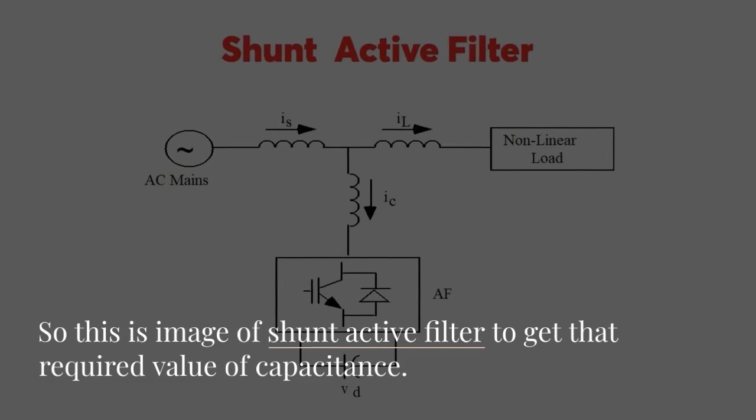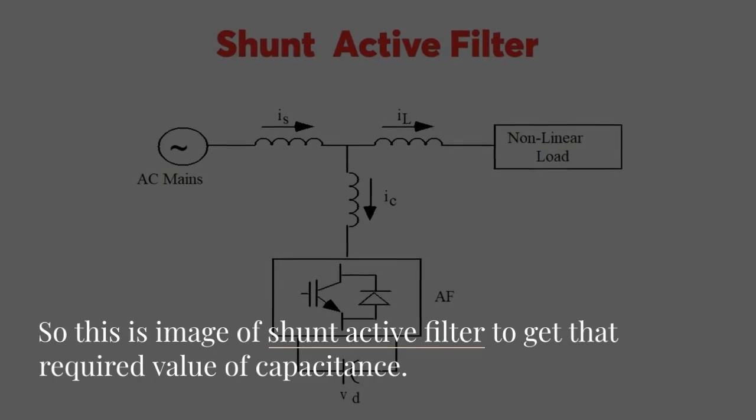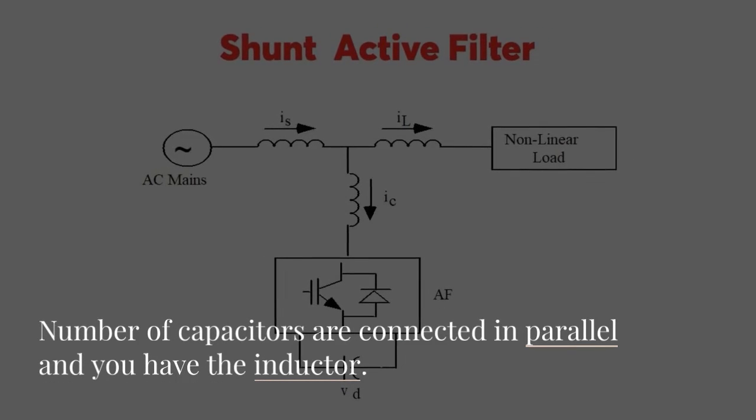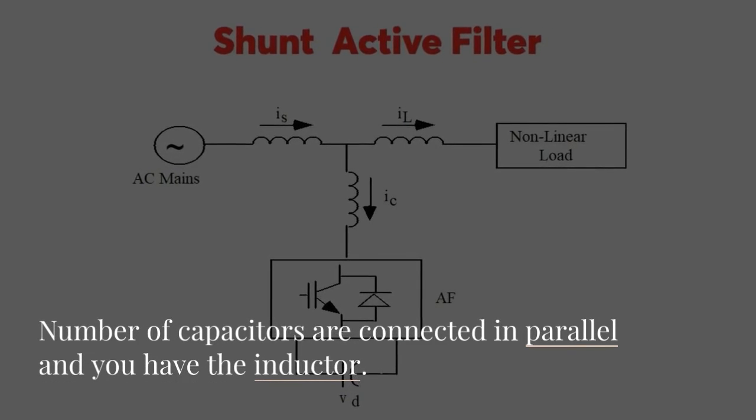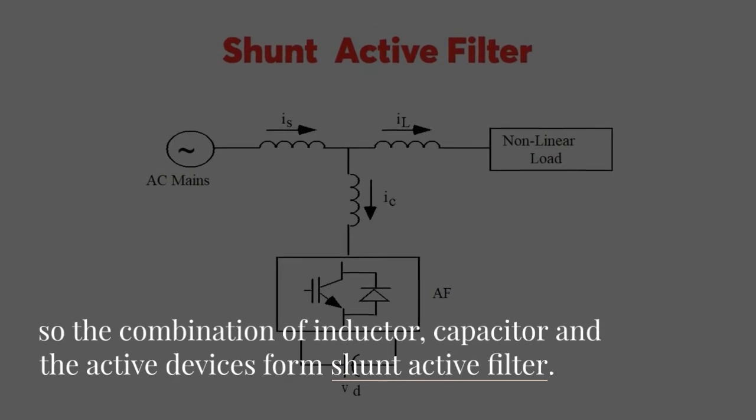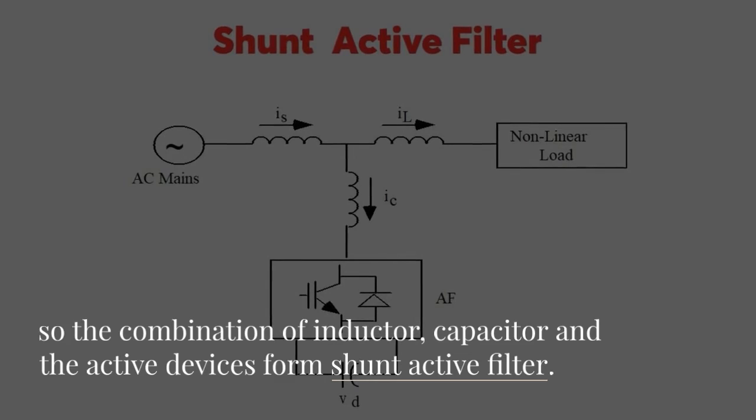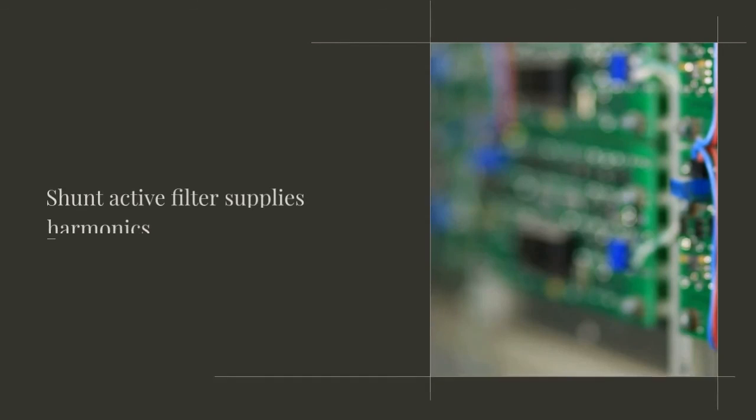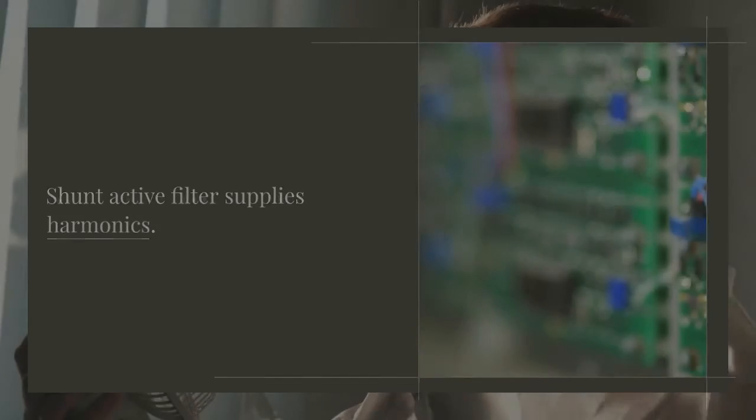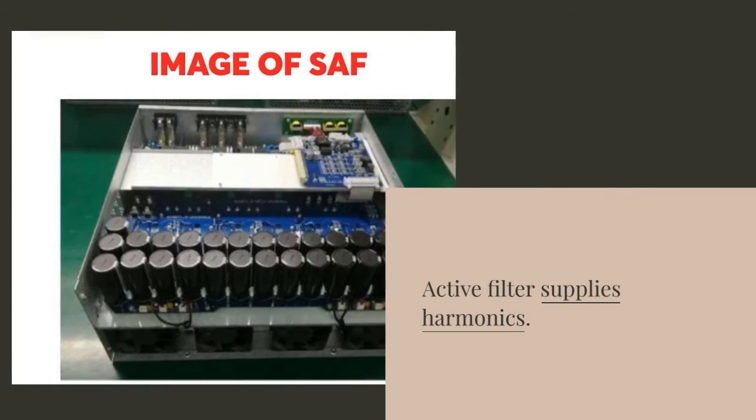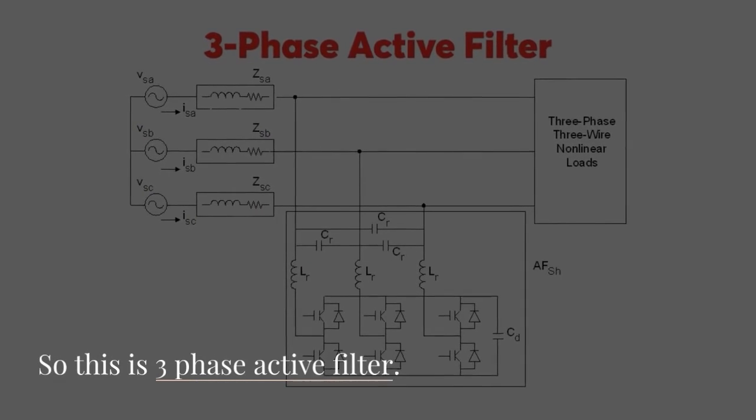So this is the image of shunt active filter. To get that required value of capacitance number of capacitors are connected in parallel and you have the inductor. So the combination of inductor capacitor and the active devices form shunt active filter. So please note that shunt active filter supplies harmonics. Passive filter draws harmonics. Active filter supplies harmonics. So this is three-phase active filter.